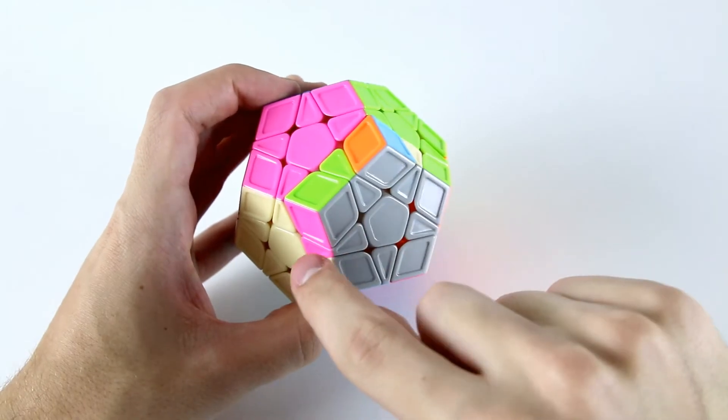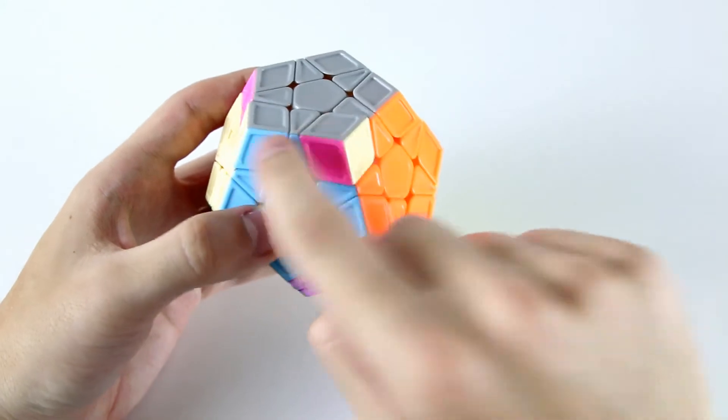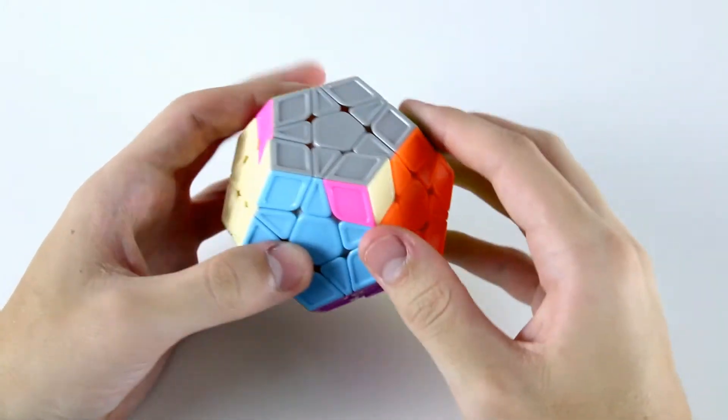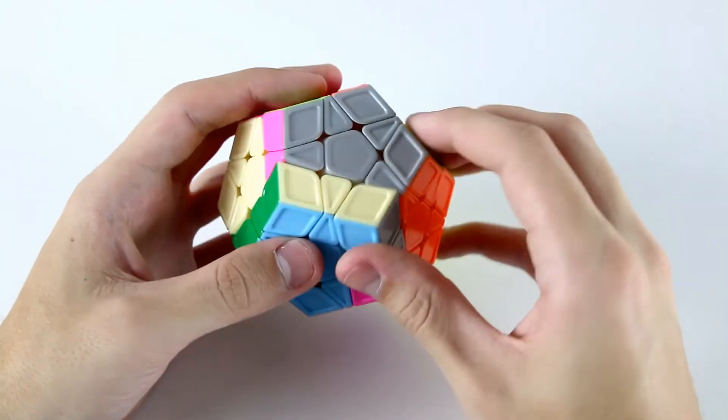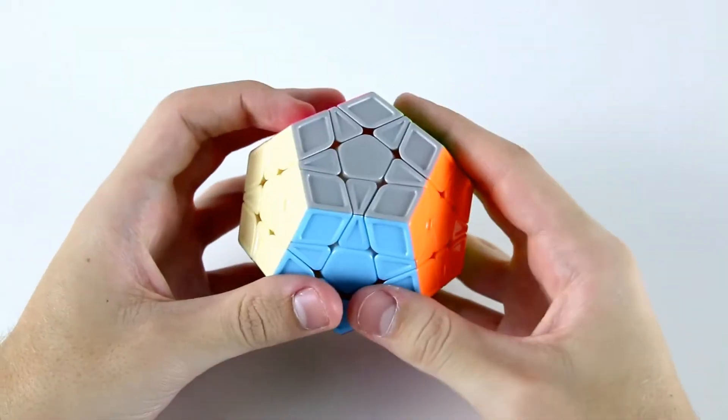So if we have this case with the block over here on this left-hand side with the same two pieces from our Y permutation solved before, the same two blocks, then we can do something like the inverse of our Y permutation to solve that case.